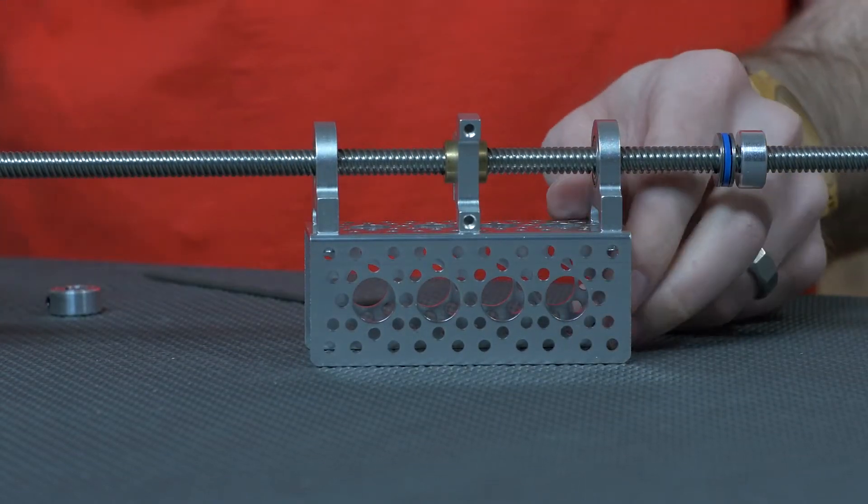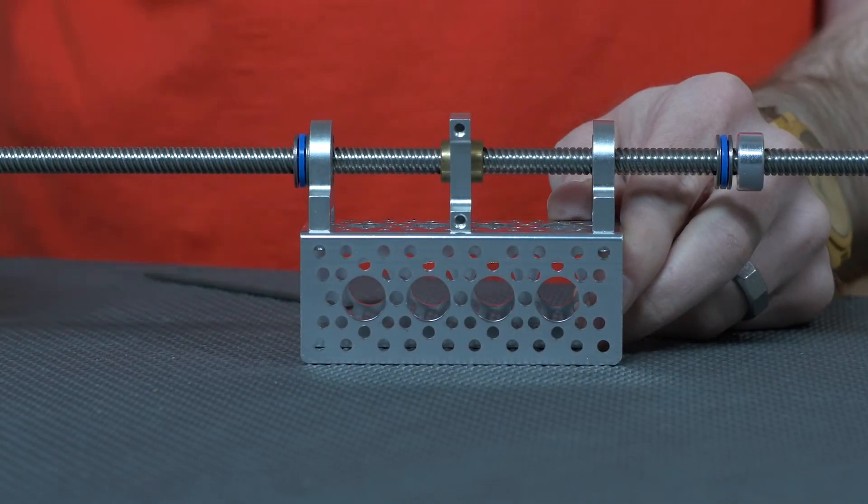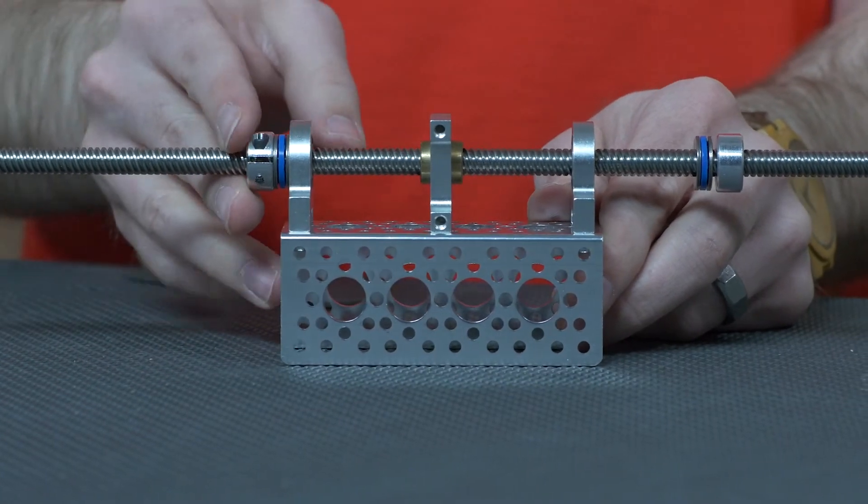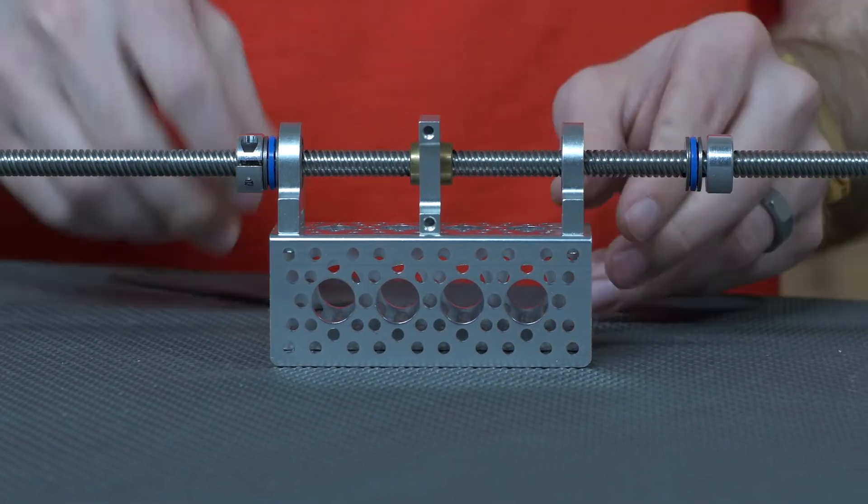And so you're going to use a thrust bearing, and now you can support that load and reduce the friction.